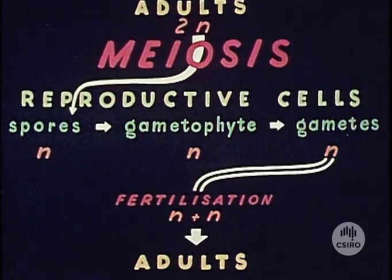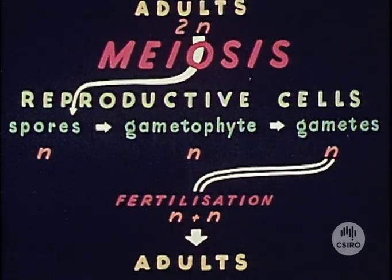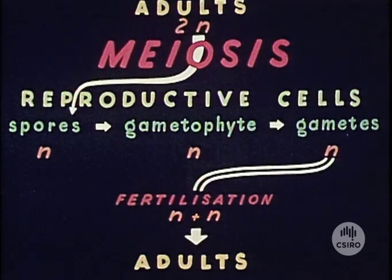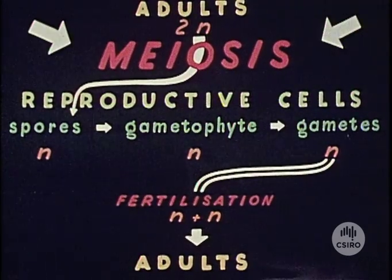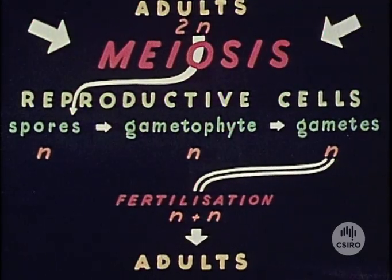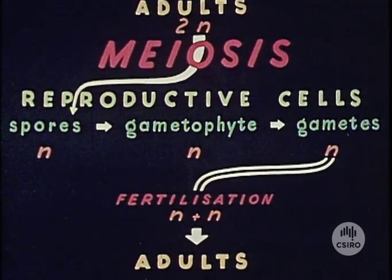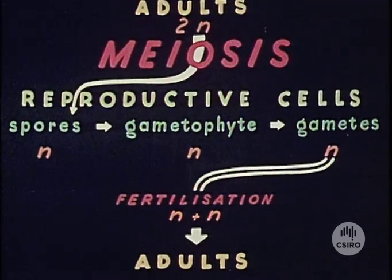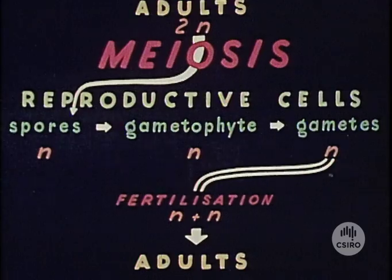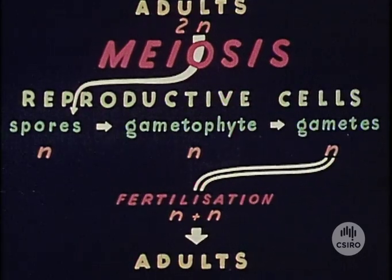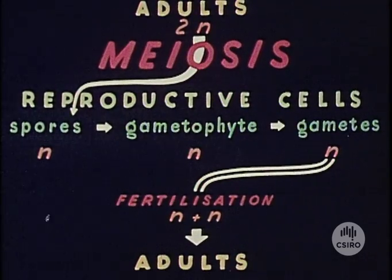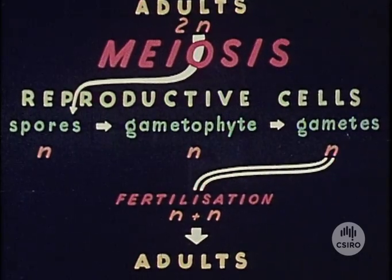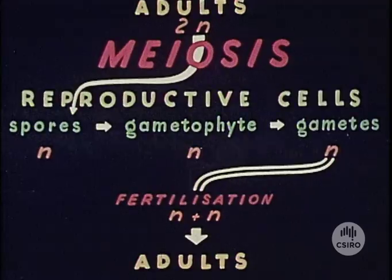Meiosis and fertilization are complementary to each other. Meiosis halves the adult chromosome number; fertilization doubles the gamete chromosome number. This halving and doubling makes certain that the chromosome number of the adult cell remains constant from generation to generation.